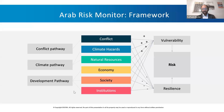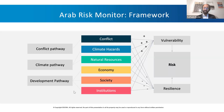Providing a holistic view means that we look at conflict and especially drivers of conflict from different perspectives. Starting from the left, you can see the three main pathways: conflict, climate, and development. The conflict pathway consists of conflict-related variables such as conflict grievances, peace and security-related variables, including displacement and conflict proximity. The climate pathway consists of natural resources and climate hazards particularly relevant for the region. The development pathway consists of economy, society, and institutions.